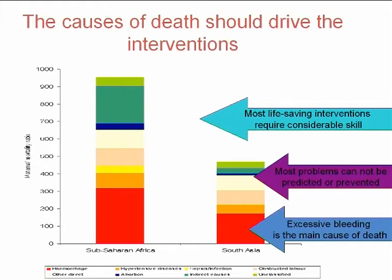What women die of is very important for understanding what we do about it. Looking at data for Sub-Saharan Africa and South Asia — the two regions where the problem is biggest — the largest cause of death is haemorrhage: women bleeding to death, typically after delivery. Most of these problems cannot be easily prevented ahead of time. Unlike immunization, there's no vaccine to prevent postpartum haemorrhage or obstructed labour. Most life-saving interventions require considerable skill — these are not simple behaviours like promoting early exclusive breastfeeding; they are more complex interventions.